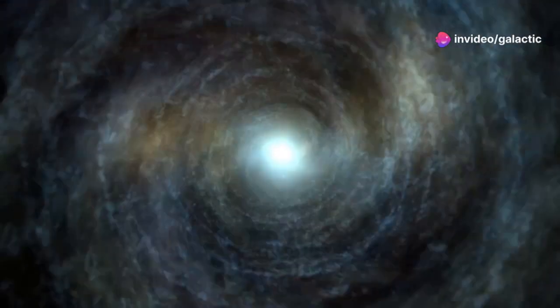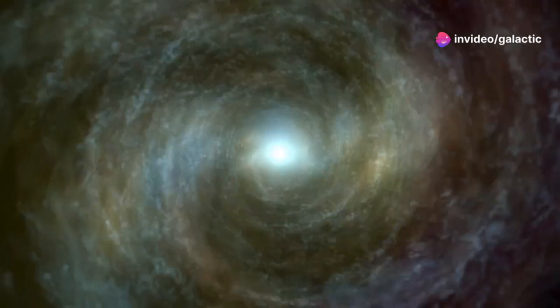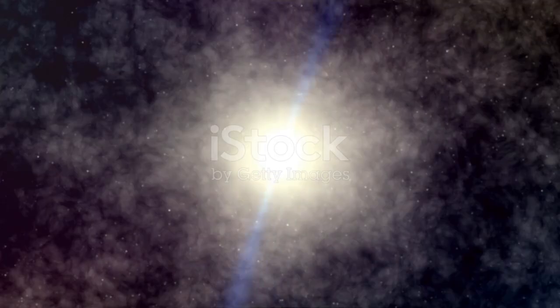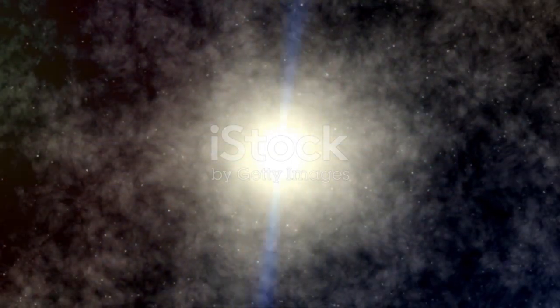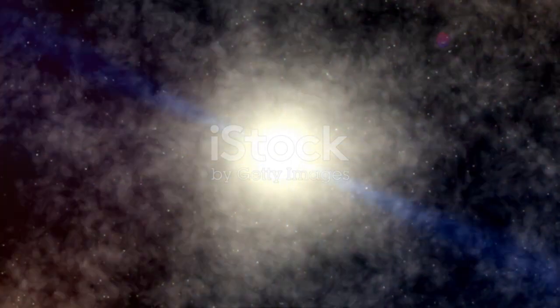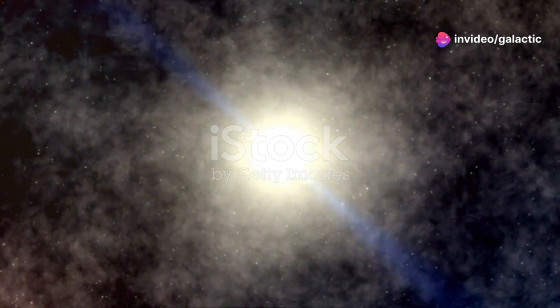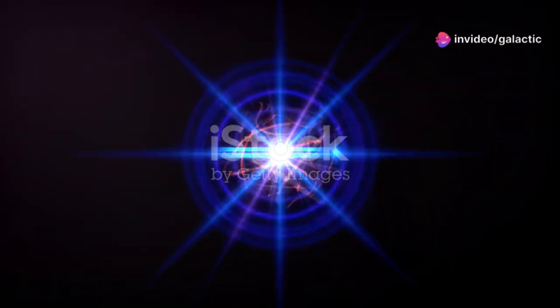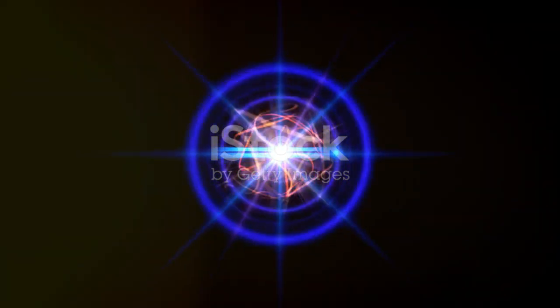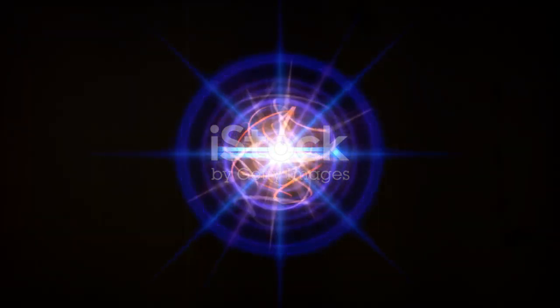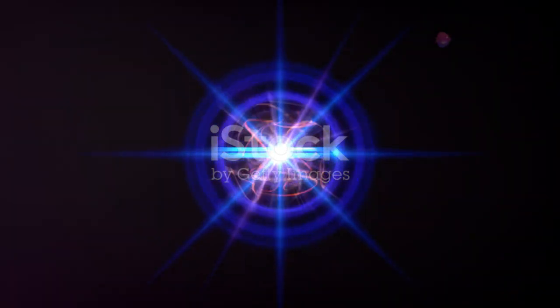The gravitational forces between the pulsar and its companion create intense tidal interactions, stripping material from the companion star. This cosmic cannibalism gives PSR J0952-0607 its intriguing nickname and fuels its extreme behavior. The material from the companion star falls onto the pulsar, increasing its rotational speed and energy output.